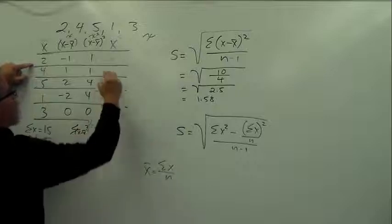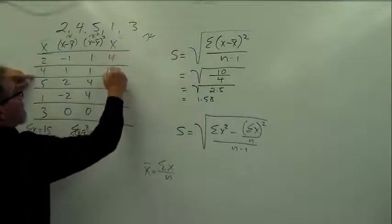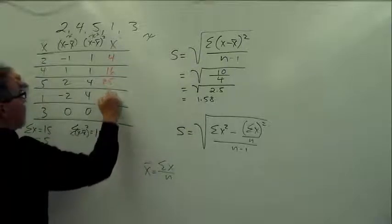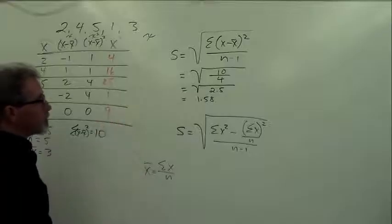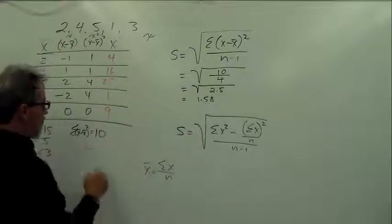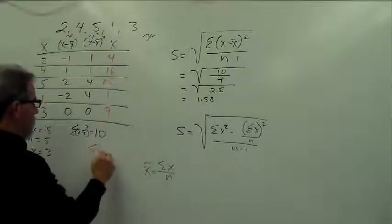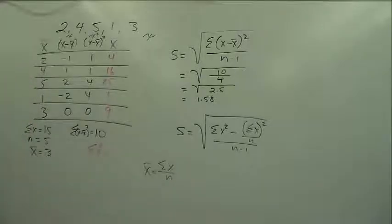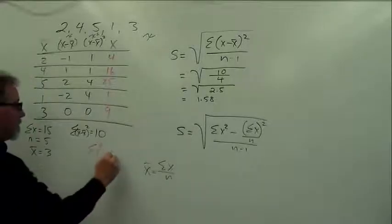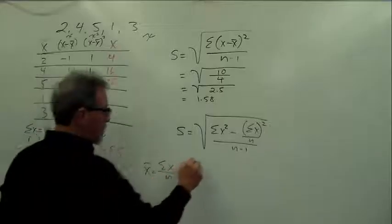We're just going to take all the x's and square them. 2 times 2 is 4, 16, 25, 1, and 9. And then it says, sum all those up. Well, we're going to sum all the x squares. And when we sum all the x squares, they come up to 55. So there you go.